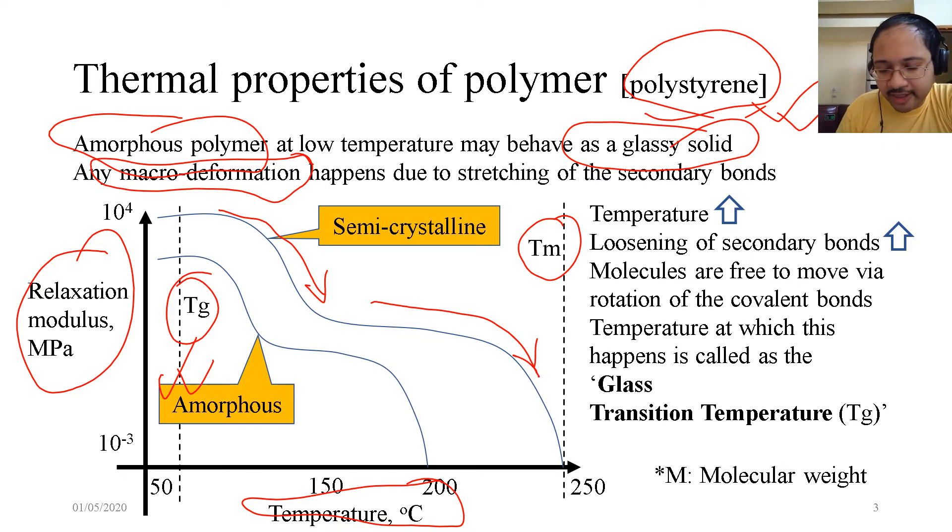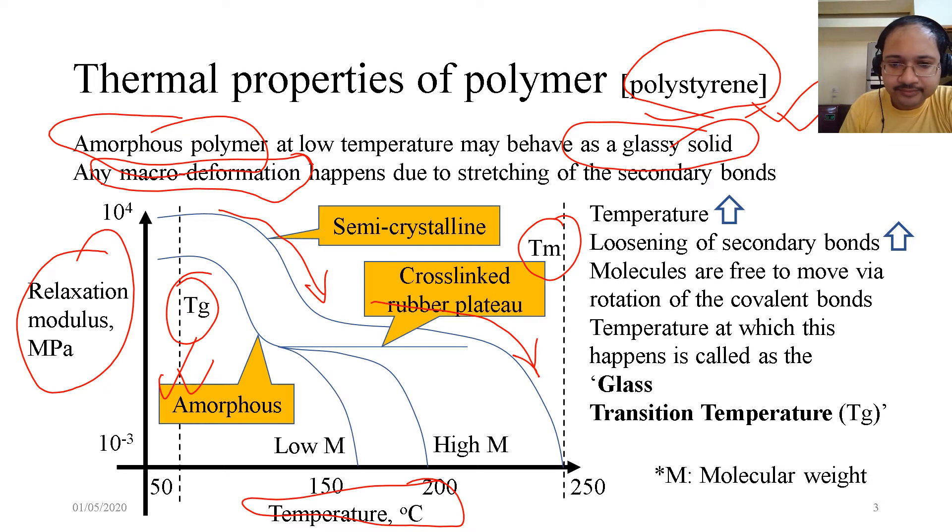This is a plot which has relaxation modulus in megapascals in the y-axis and temperature in the x-axis. The leftmost part is Tg, the glass transition temperature, and Tm, the melting temperature. This curve is for a semi-crystalline polystyrene. This is for an amorphous. The amorphous line is below the semi-crystalline line because amorphous material has lesser modulus. Once this amorphous polymer cross-links, which forms this rubber plateau, the modulus is now constant, parallel to the x-axis.